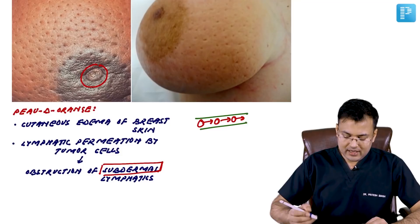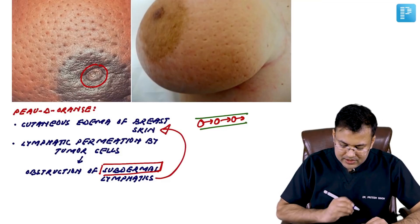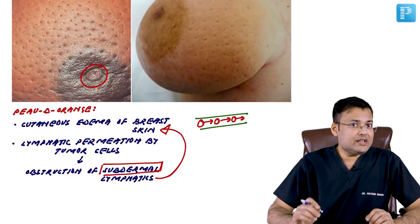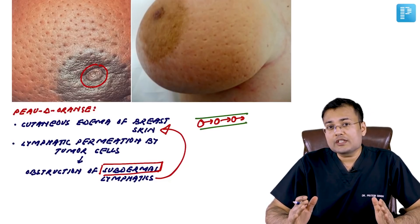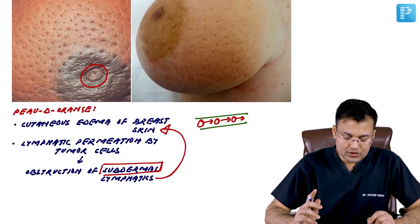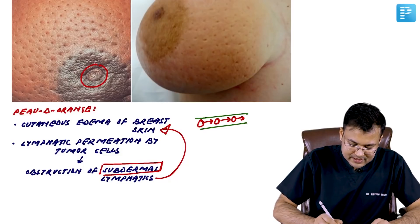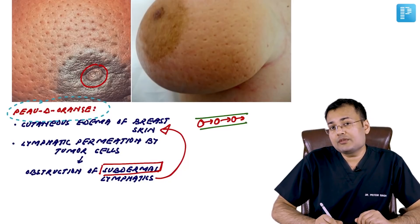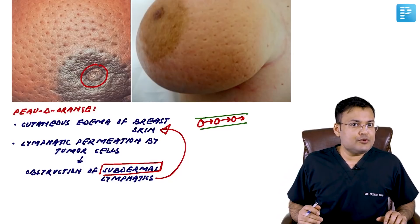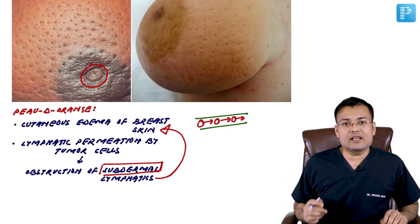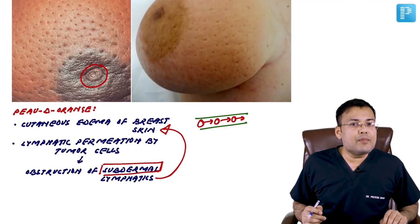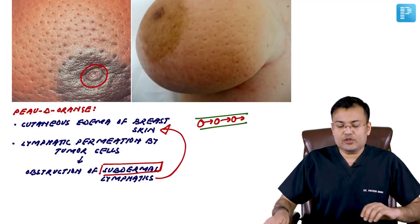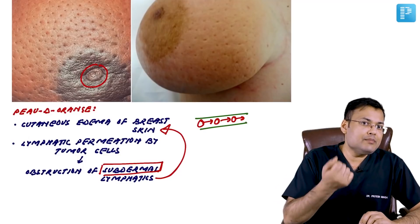The obstructed lymphatics are the subdermal lymphatics, causing cutaneous edema — this is peau d'orange. There was a question in AIIMS: what is the most conspicuous sign of breast cancer? The answer is peau d'orange. Apart from peau d'orange, three other signs are asked: dimpling, puckering, and cancer en cuirasse.